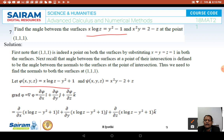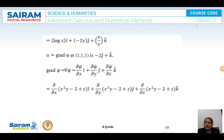For the first surface, let φ(x,y,z) = x·log z - y² + 1. Taking partial derivatives: with respect to x gives log z·i, with respect to y gives -2y·j, and with respect to z gives (x/z)·k. So grad φ = log z·i - 2y·j + (x/z)·k. At the point (1,1,1), log 1 = 0, so u = grad φ = -2j + k.